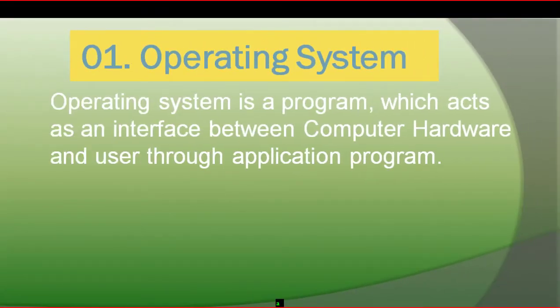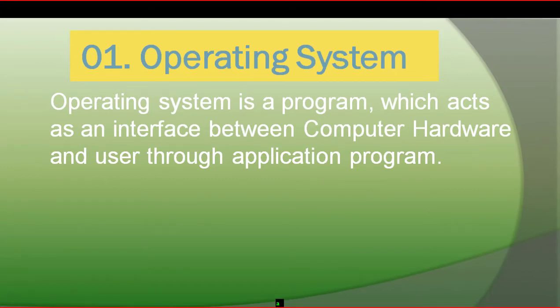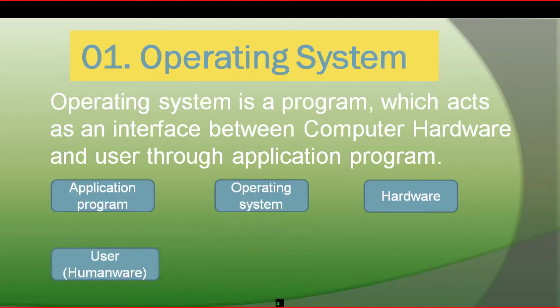The operating system is used to control the program. It acts as an interface between computer hardware and the user through application programs. The application program is used to control the system, and the operating system controls the computer hardware and user through application programs.